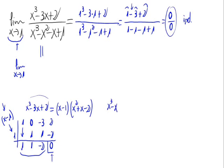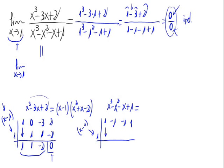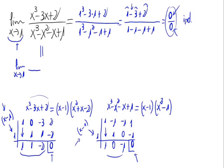Now let's simplify the denominator. Again, using Ruffini, trying with 1. The coefficients are: 1 for x cubed, minus 1 for x squared, minus 1 for x, and plus 1 for the independent term. So, 1 times 1 is 1, minus 1 plus 1 is 0, 0 plus minus 1 is minus 1, minus 1 times 1 is minus 1, and 1 minus 1 is 0. So we have x minus 1 times the quotient x squared minus 1.